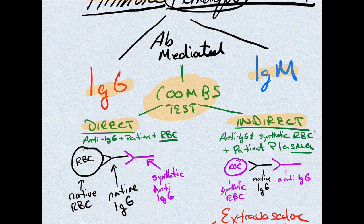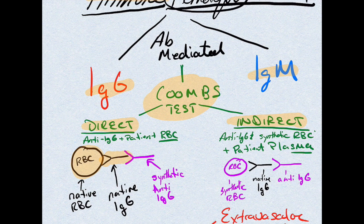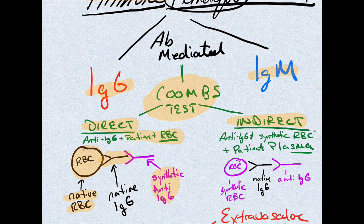In the direct test, we're testing the patient's red blood cells — specifically whether they already have an IgG attached. For whatever reason, maybe autoimmune or drug-related, the body has made an IgG that's binding to the red blood cell and causing problems. In the direct Coombs test, a foreign anti-IgG is added to the patient's red blood cells. If those cells have antibodies on them, they'll react with the anti-IgG and produce agglutination.